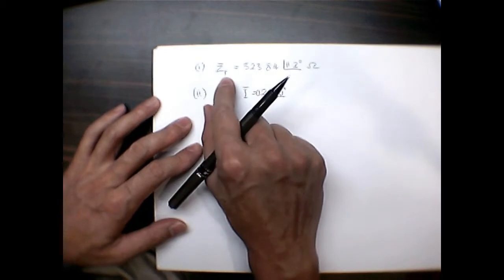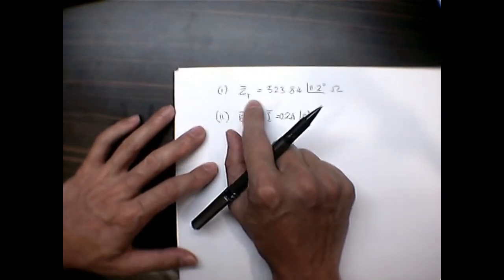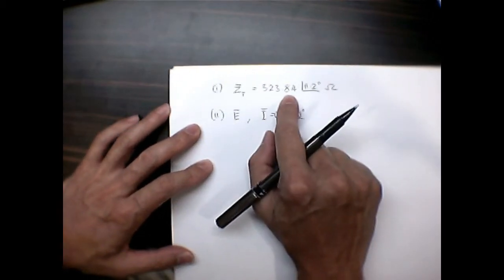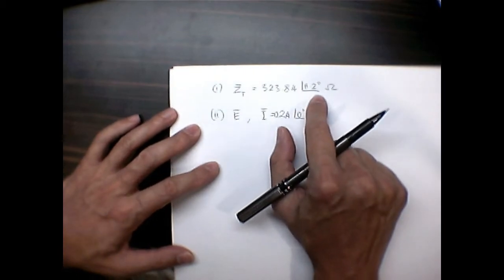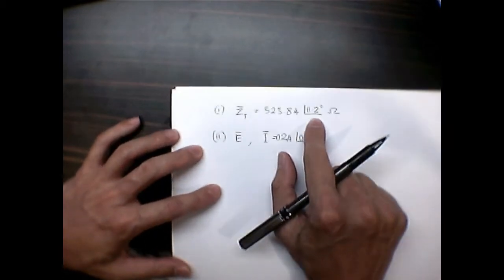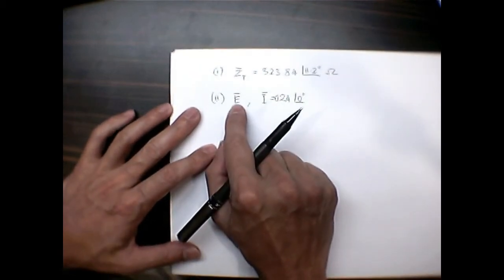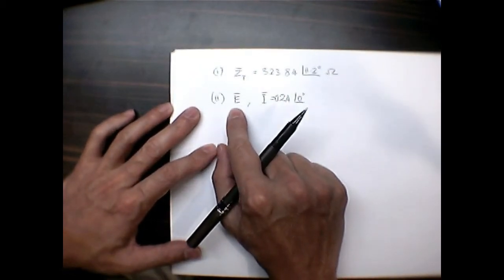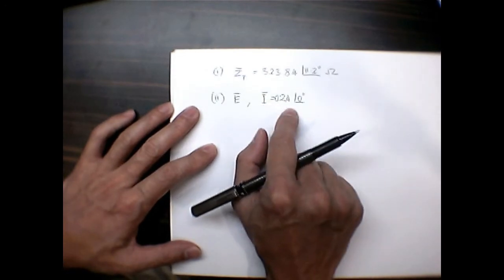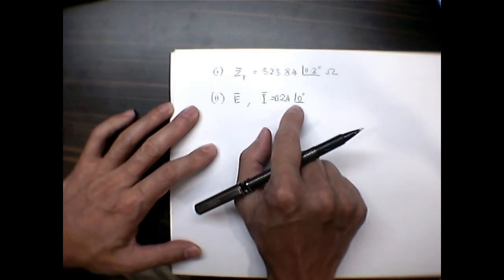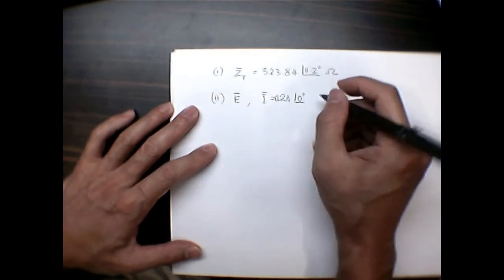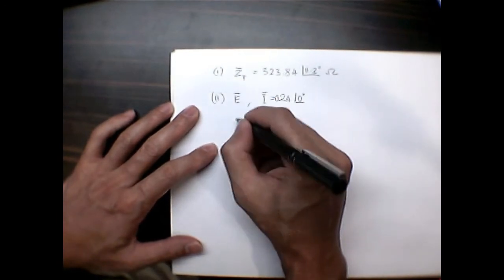All right, in part one we calculated zt to be 3.84 at the angle of 11.2 ohms. Now in part two we want to calculate the supply voltage given that the incoming current is 0.2 amps at the angle of zero. Now using Ohm's law...